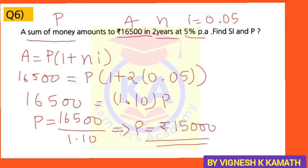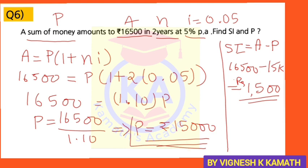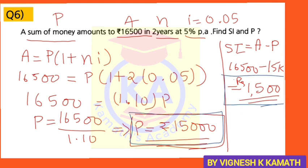One part of the question is done — finding P. Now the other part is to find SI. You know the formula: SI = A − P. The total amount 16,500 minus P which is 15,000 equals 1,500. So the SI answer is Rs. 1,500. The value of P is Rs. 15,000 and the value of SI is Rs. 1,500. I hope you are clear with this question.